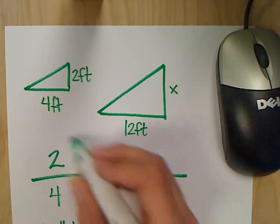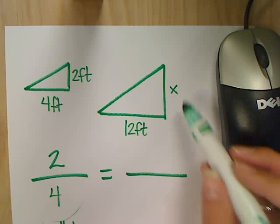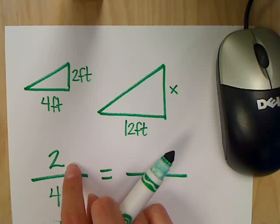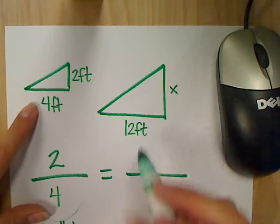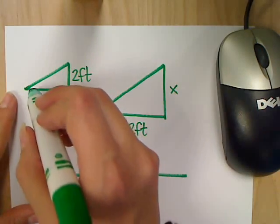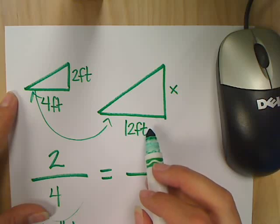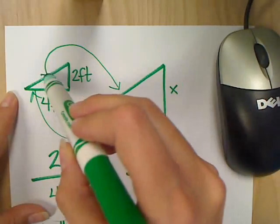Small triangle, which means that this one has to do with every number for the large triangle. But again, let's find those corresponding sides. This 4 corresponds to which side here on this bigger one? 12, because they're both on the bottom, since they're facing the same direction.